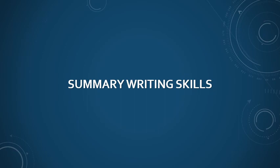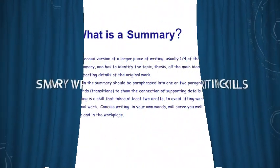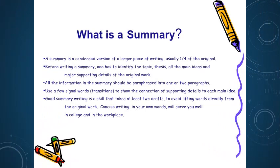We are now going to talk about the third learning outcome of today's lecture: summary writing skills. First of all, what is a summary? A summary is a condensed version of a larger piece of writing, usually one fourth of the original. Before writing a summary, one has to identify the topic, thesis, all the main ideas, and major supporting details of the original work. The introductory paragraph always has a thesis statement — either in the beginning or at the end — and all the body paragraphs have main ideas connected to the thesis statement.